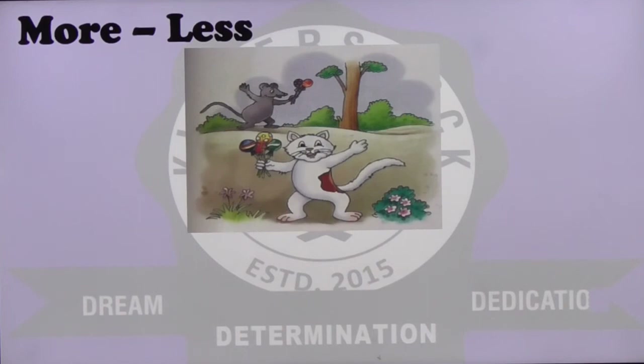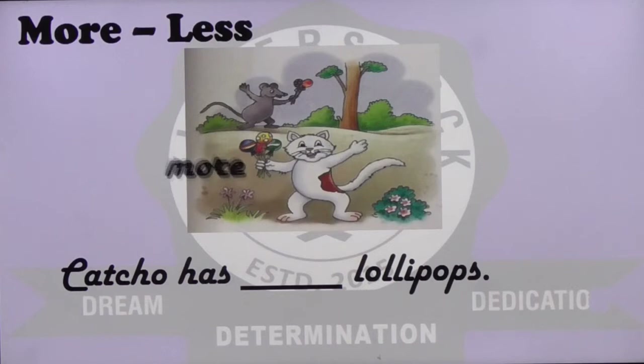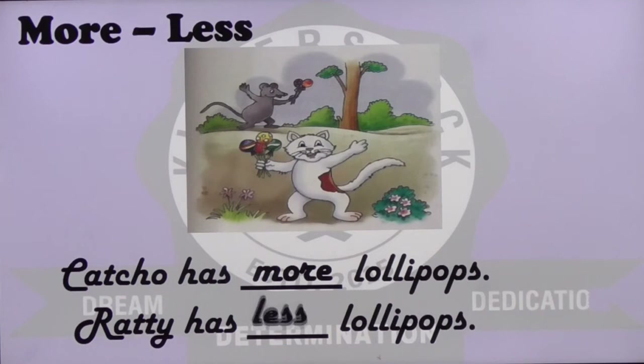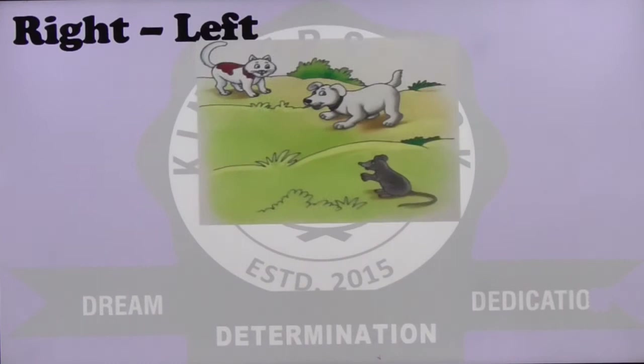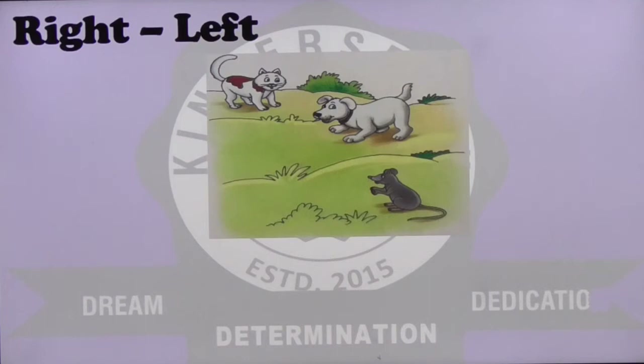More and less: there we have the picture. We have the cat standing in front and the rat behind. Catcho has more lollipops and Ratty has less lollipops.